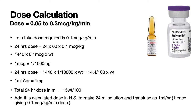The dose calculation for epinephrine is similar to dopamine, but the difference lies in the ampoule concentration. While 1 ml of dopamine contains 40 mg, 1 ml of adrenaline contains 1 mg. Hence, the dividing factor here is 100. Therefore, for giving a dose of 0.1 microgram per kg per minute, we use 15 times the weight divided by 100 to get the dose of adrenaline for 24 hours.